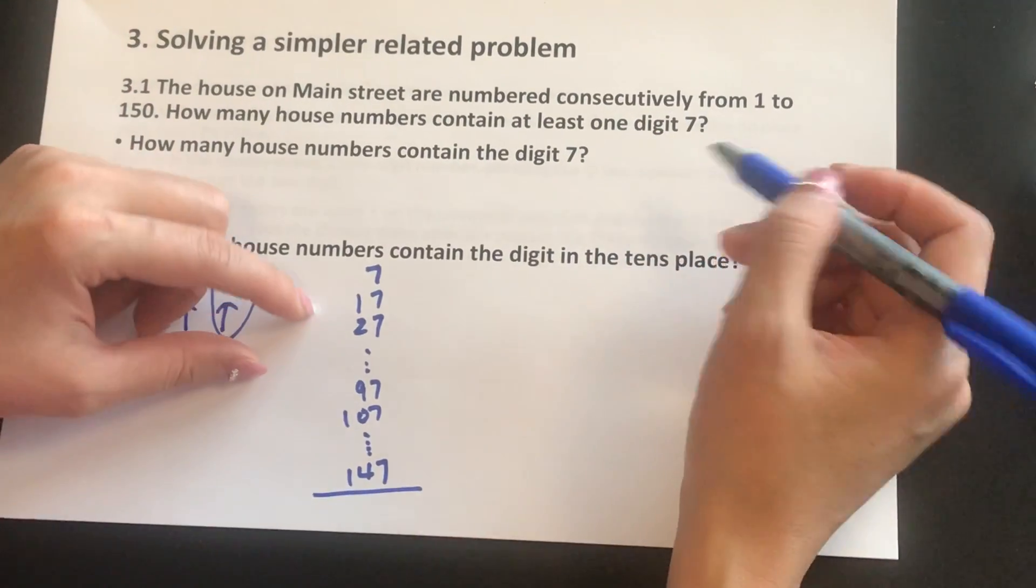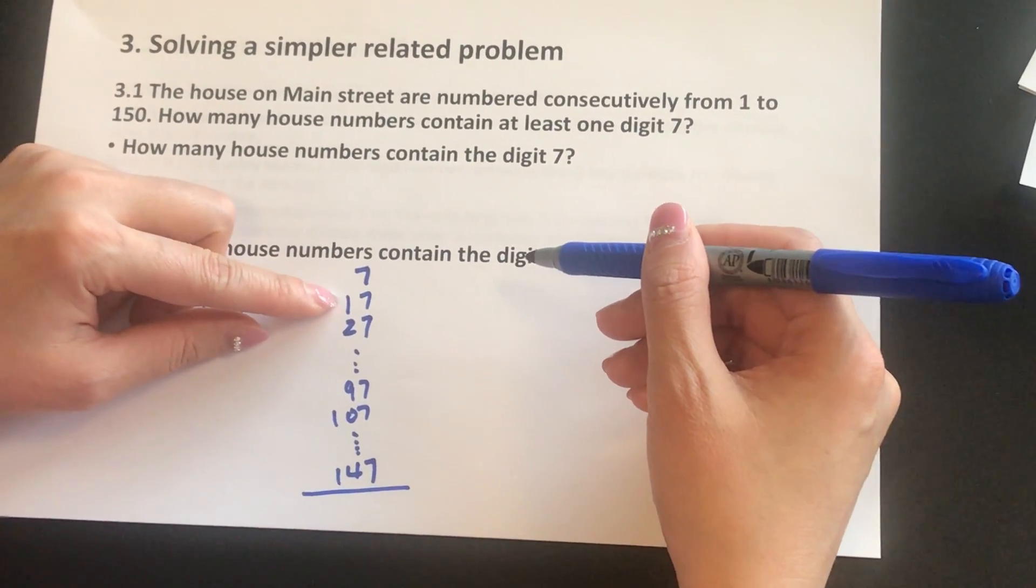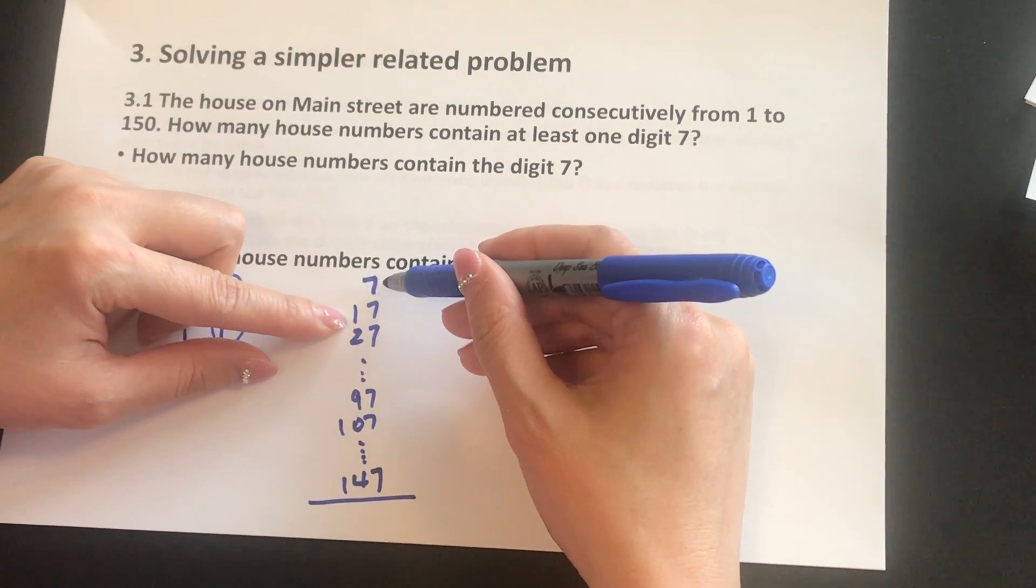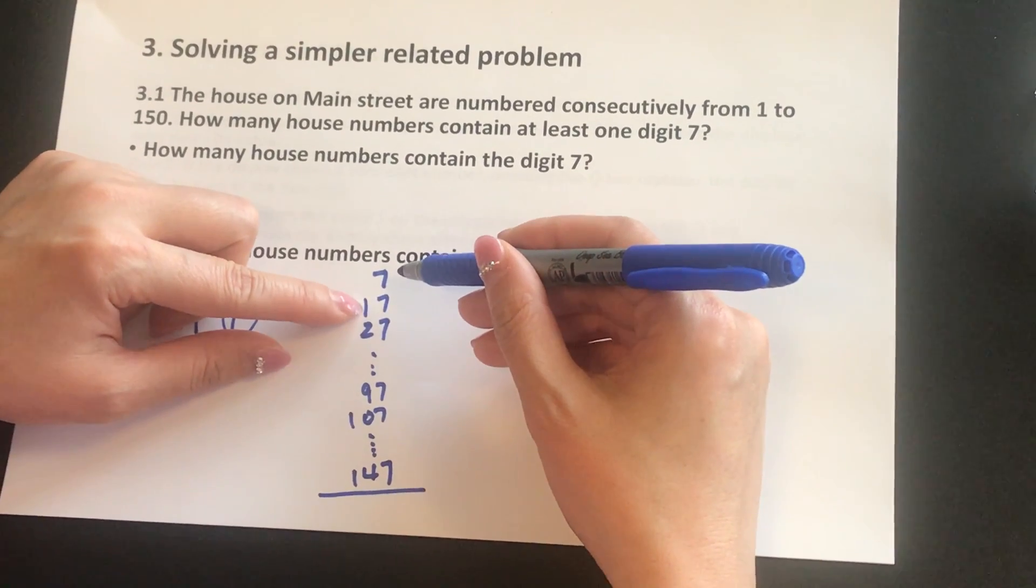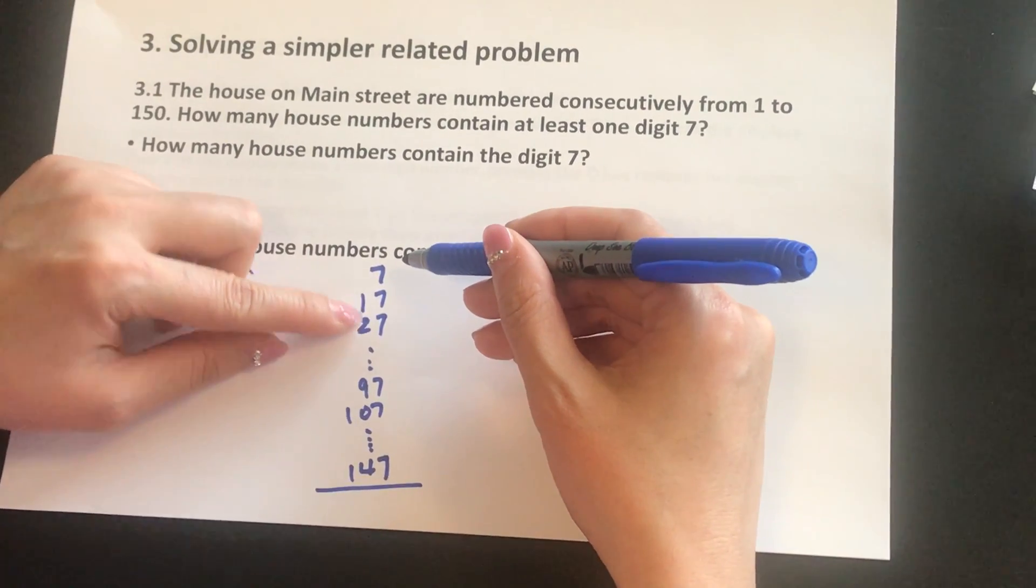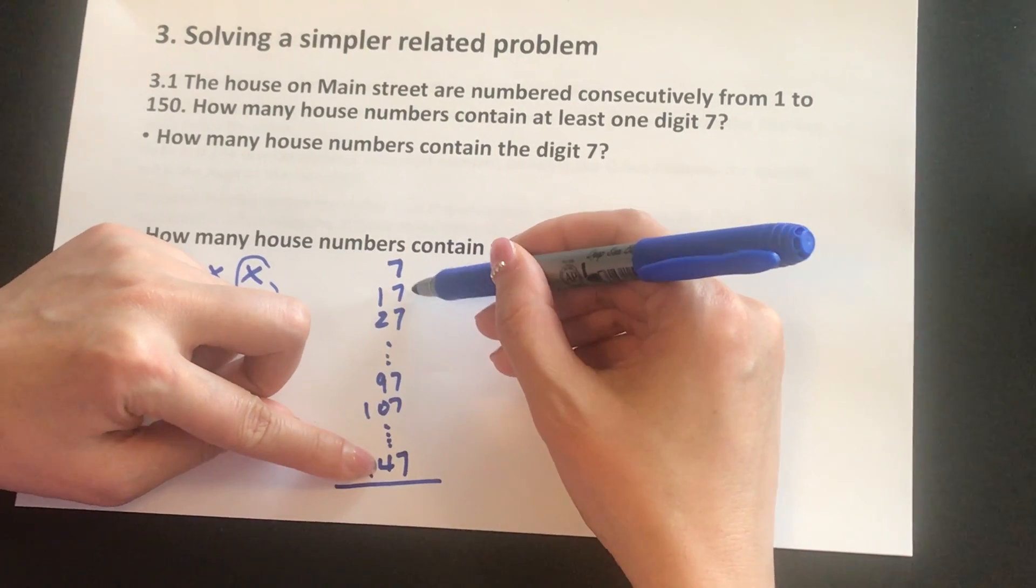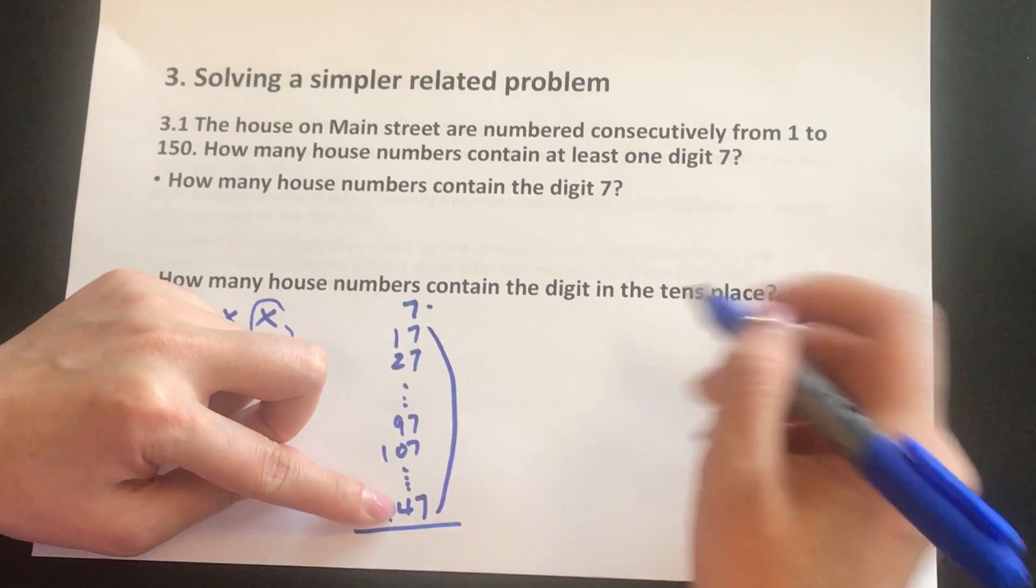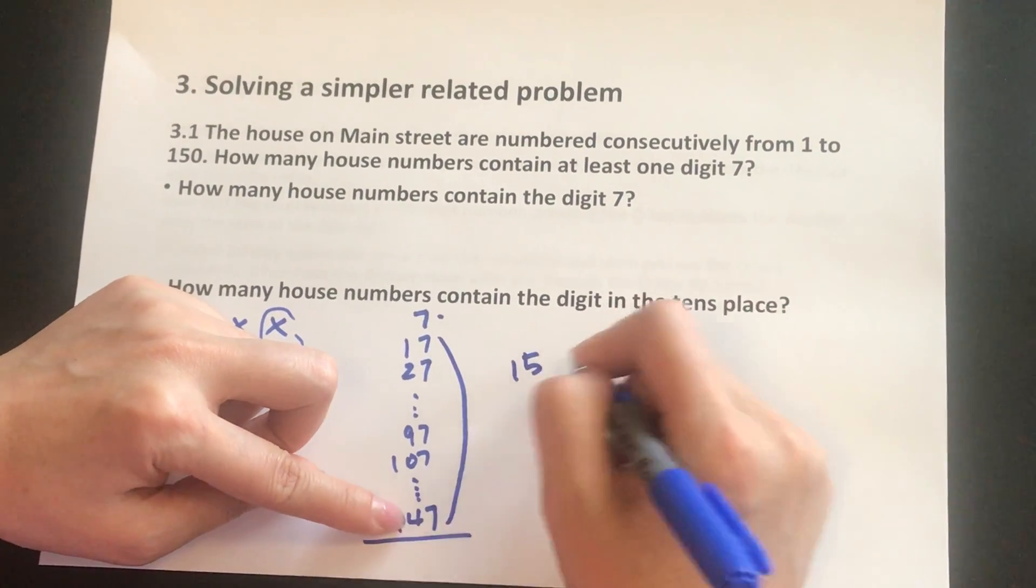So in this case, we can count how many numbers are there. Let's leave this 7 behind first. We have the tens place from 1 all the way to 14. So these are 14 numbers, plus this 1 for the single digit. So total there are 15 numbers.